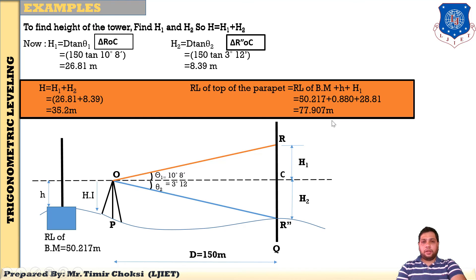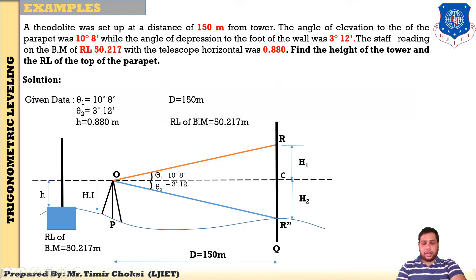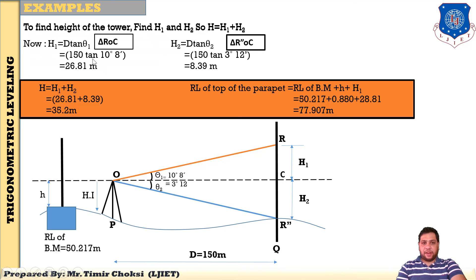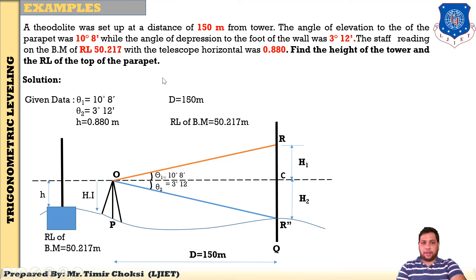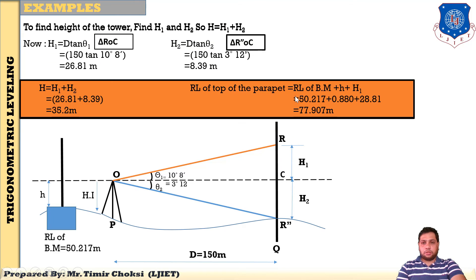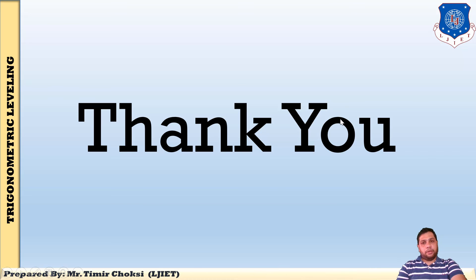Next, find the RL of the top of the parapet. RL of the top of the parapet means the RL of point R. Starting from RL of benchmark — RL of benchmark is given — plus small h (staff reading 0.880, as given in the example), then add H1 value. Note: mistakenly I have written 28 here; the answer is 26.81. So add that, and the answer will be 77.907 meters. So this is the example of case number 1. Thank you so much for watching this video. In this session, I have explained the derivation of case number 1 and one example of case number 1, where the base of the object is accessible.